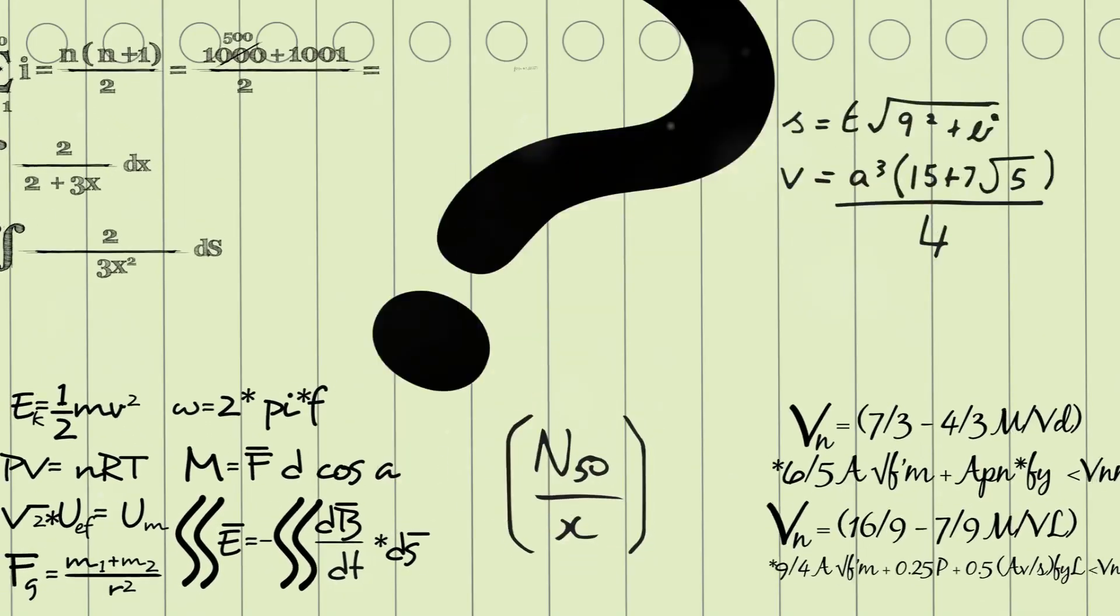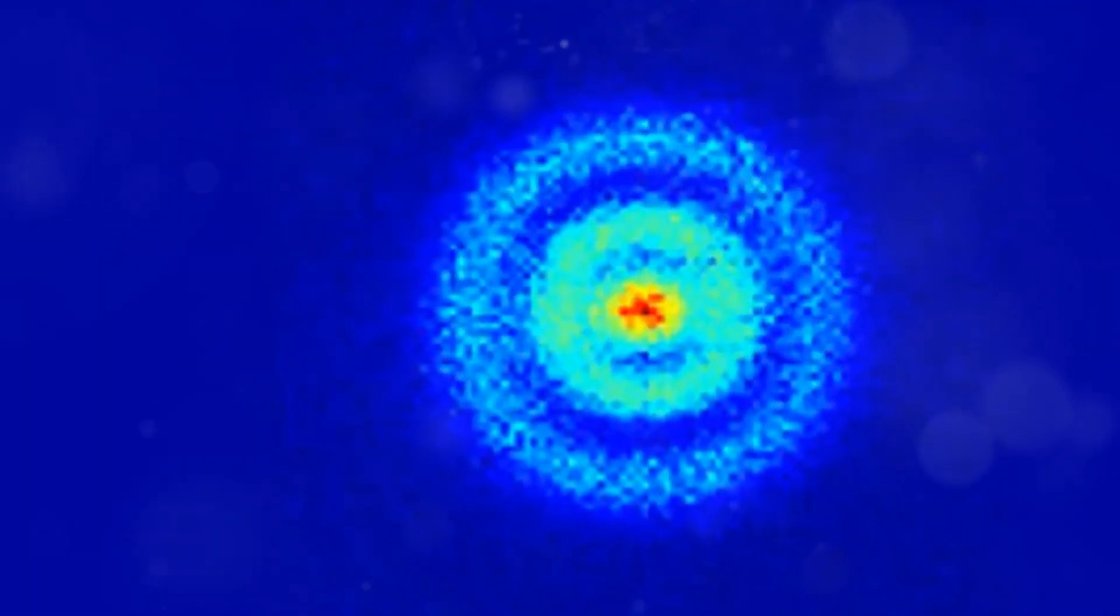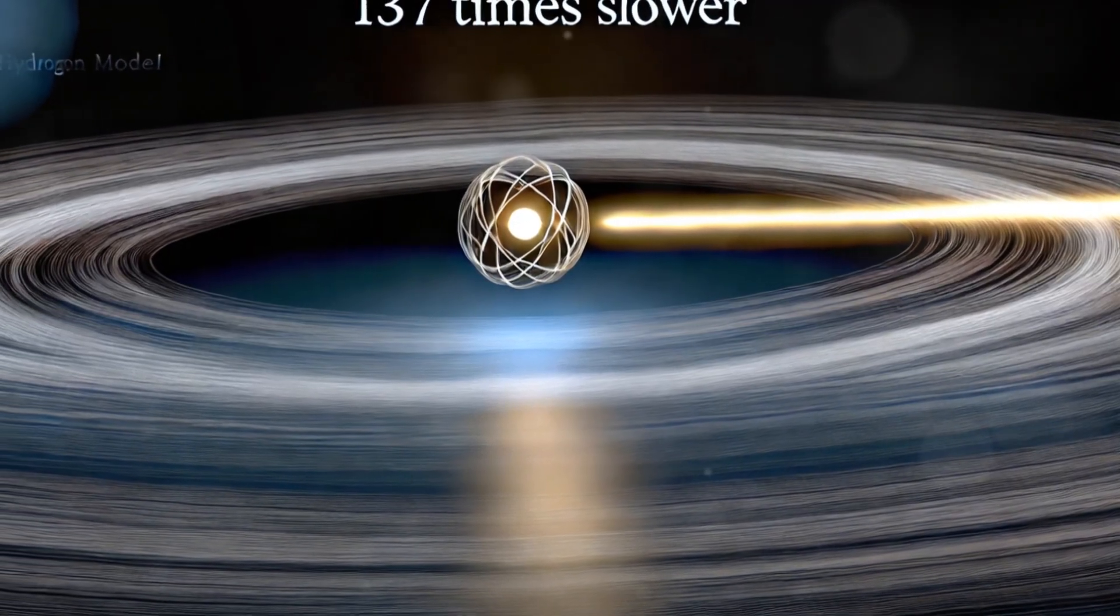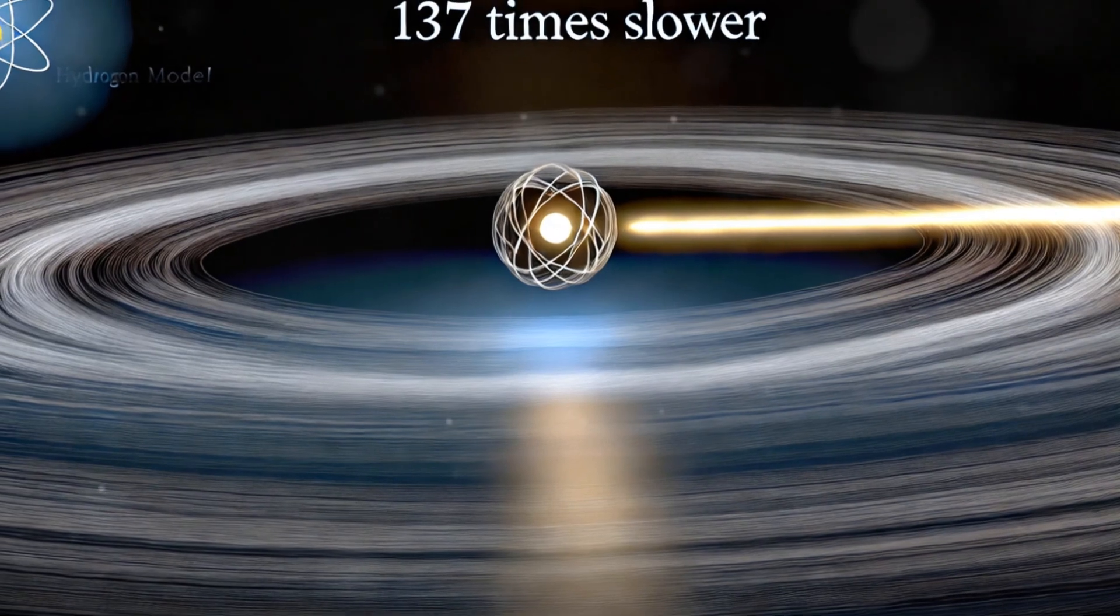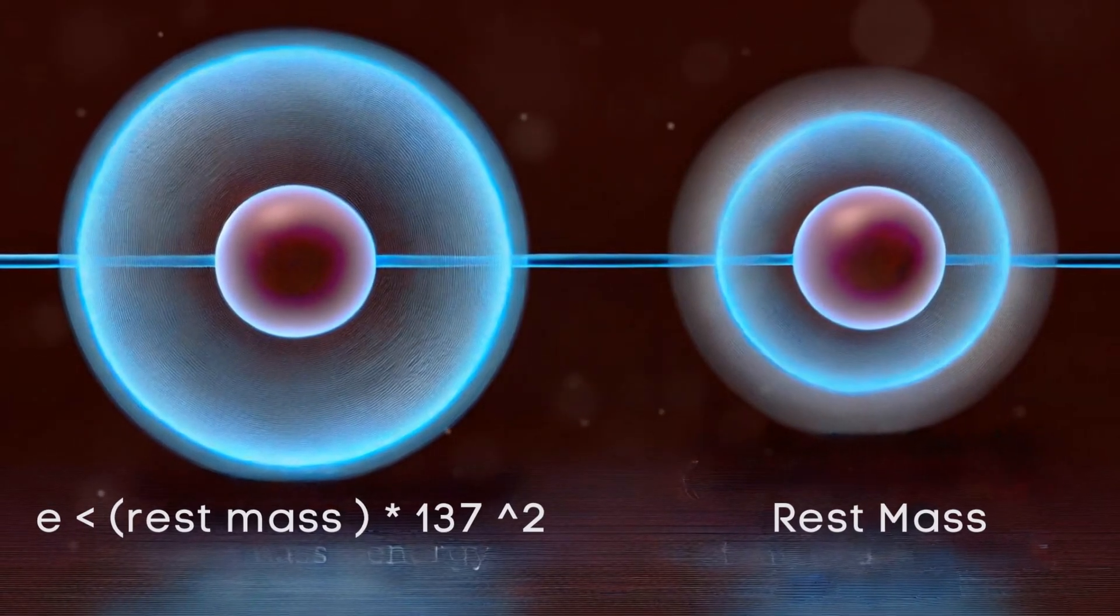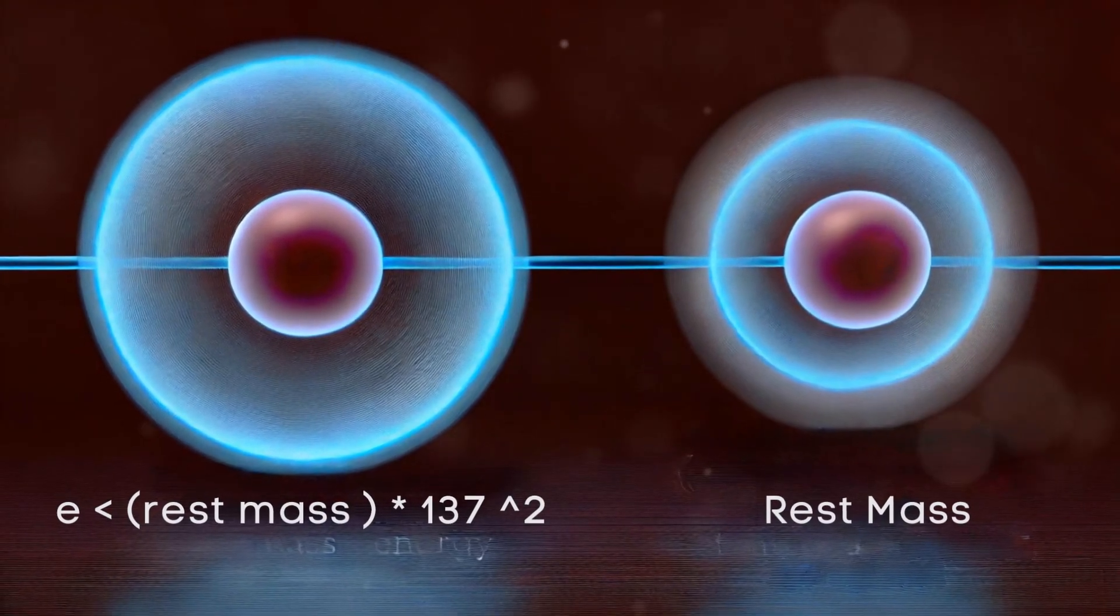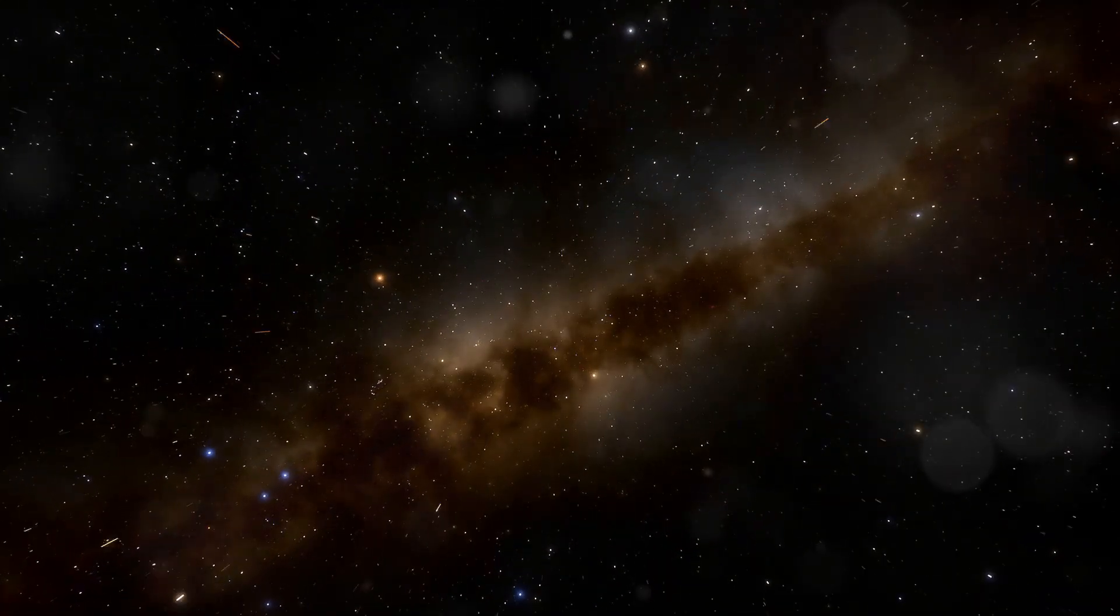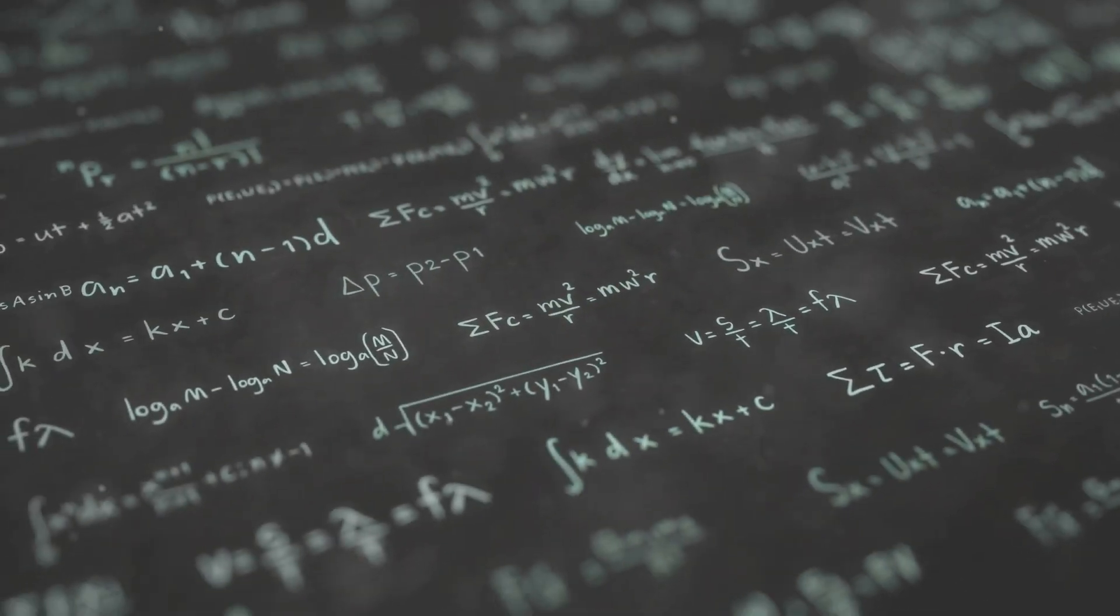Alpha's influence extends far beyond spectral lines. It appears throughout physics in unexpected places. For example, in the Bohr model of the hydrogen atom, the orbital speed of an electron in its ground state is about 137 times slower than the speed of light. The energy of that same electron is smaller than its rest mass energy by a factor of 137 squared. These ratios are not coincidental, but deeply tied to the structure of our universe.